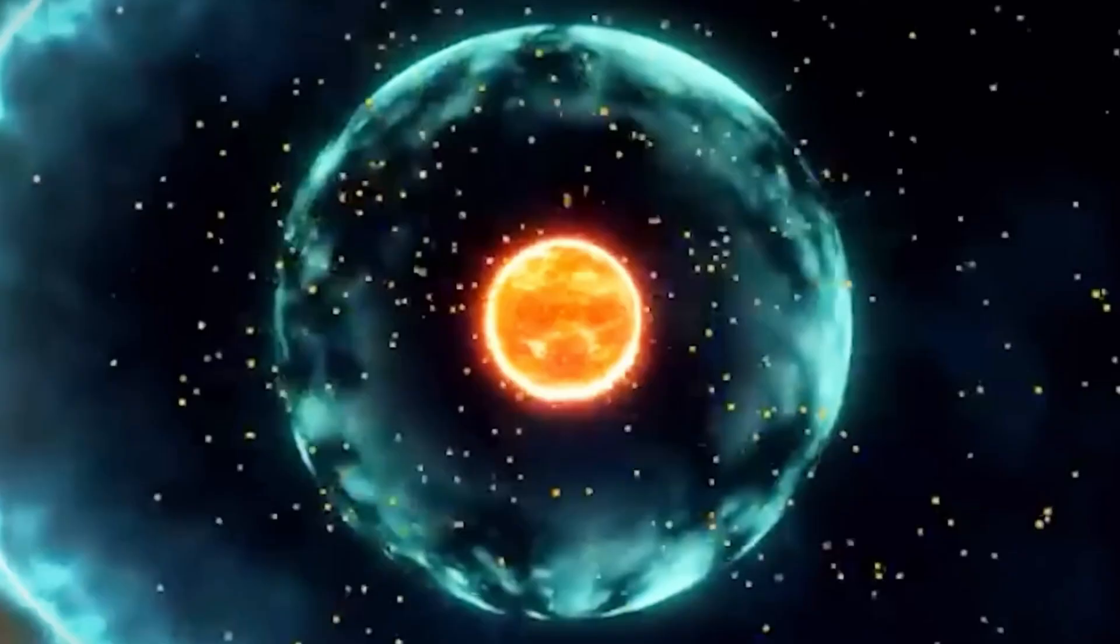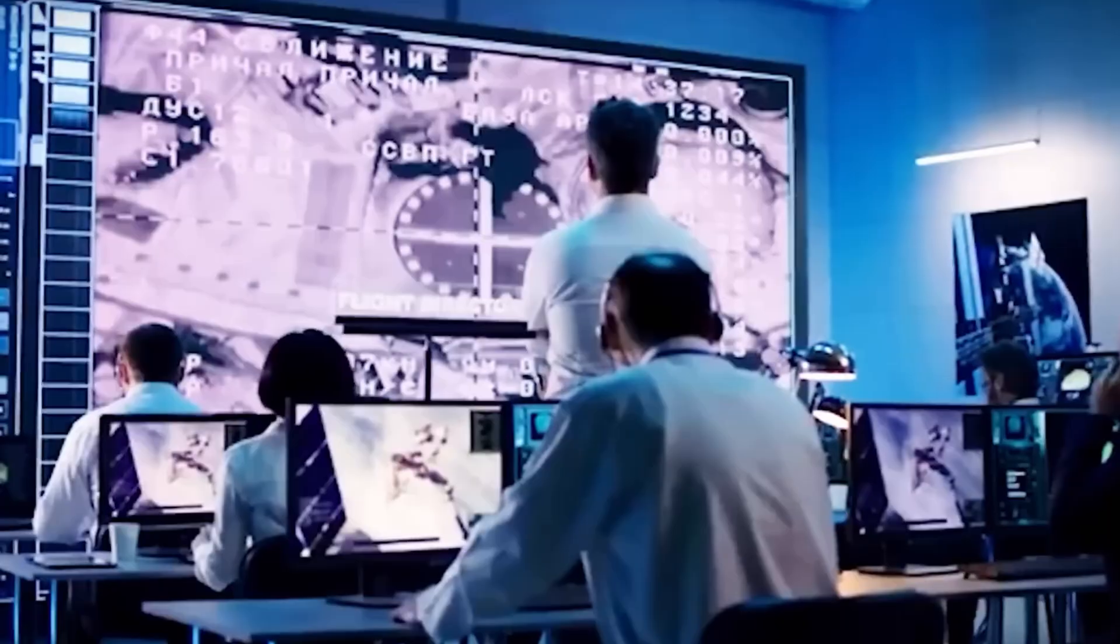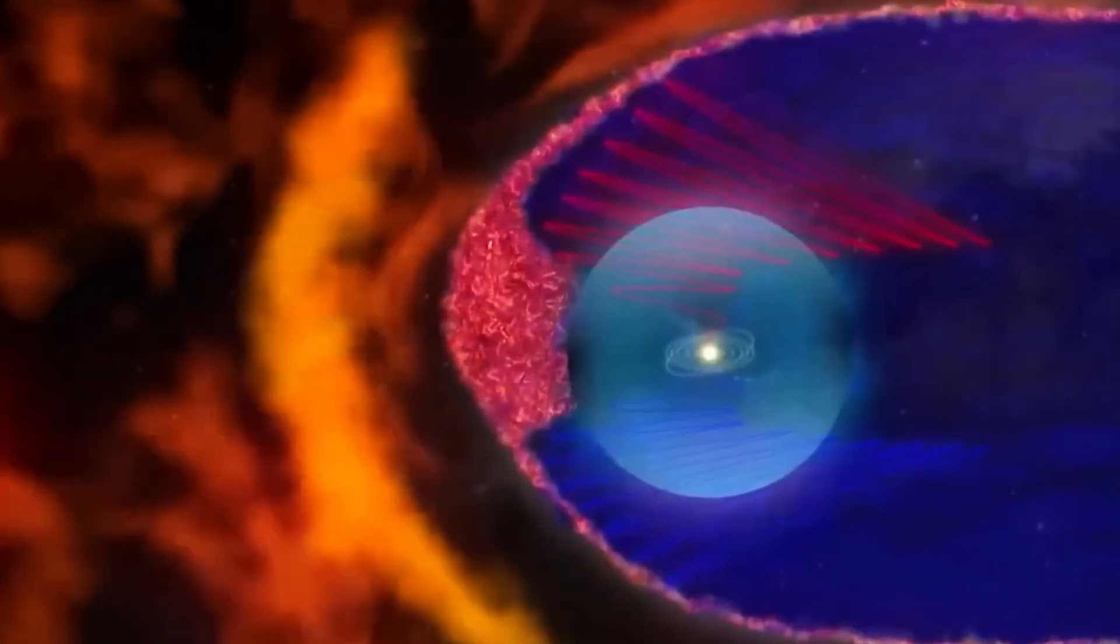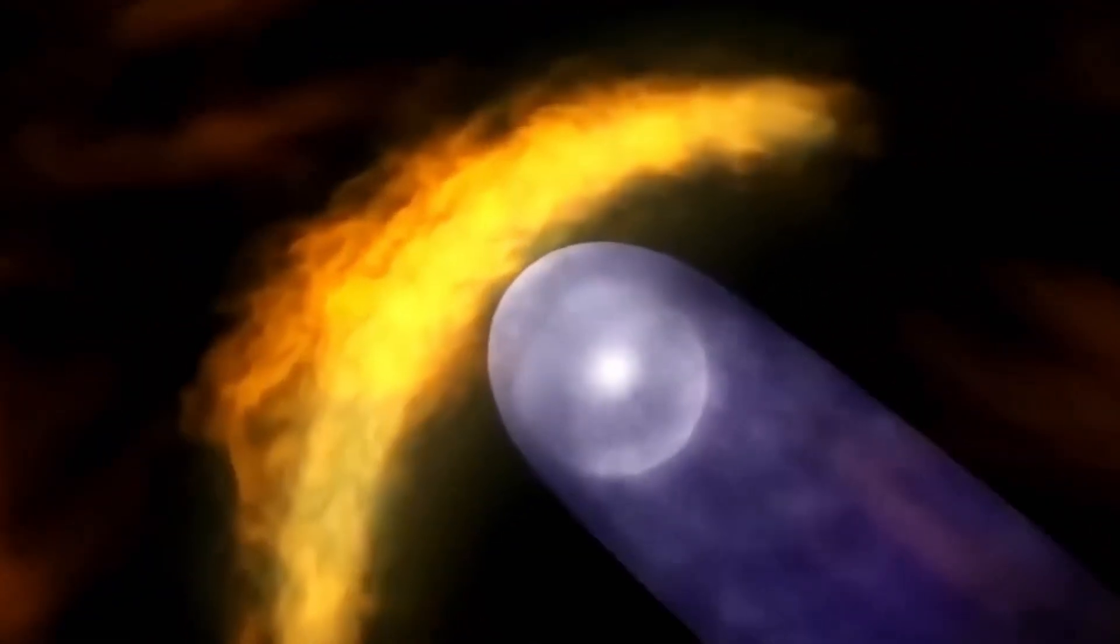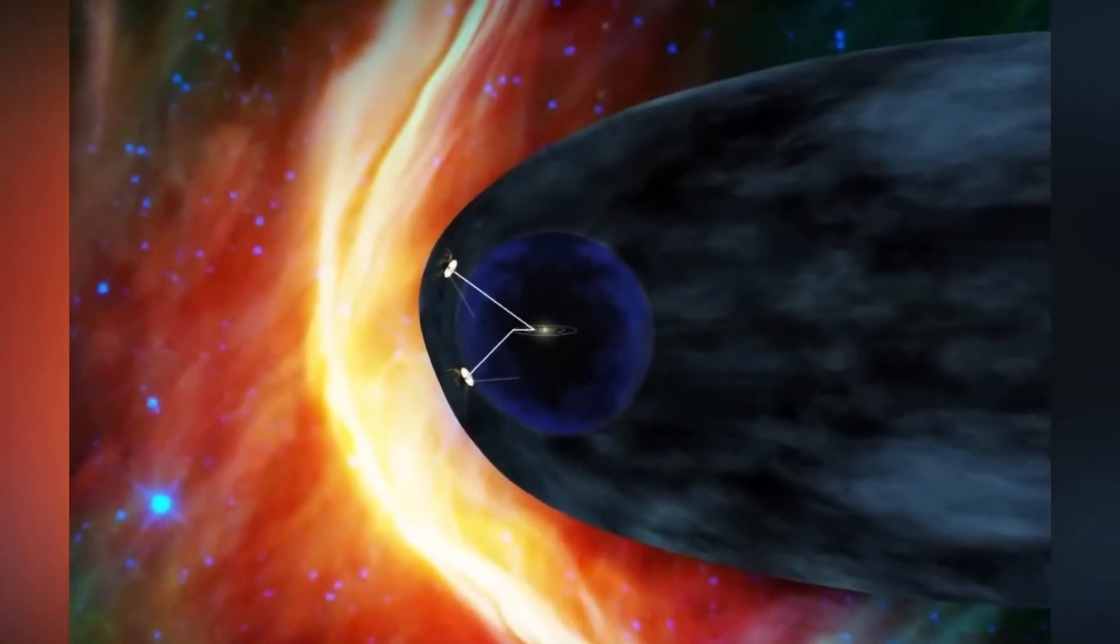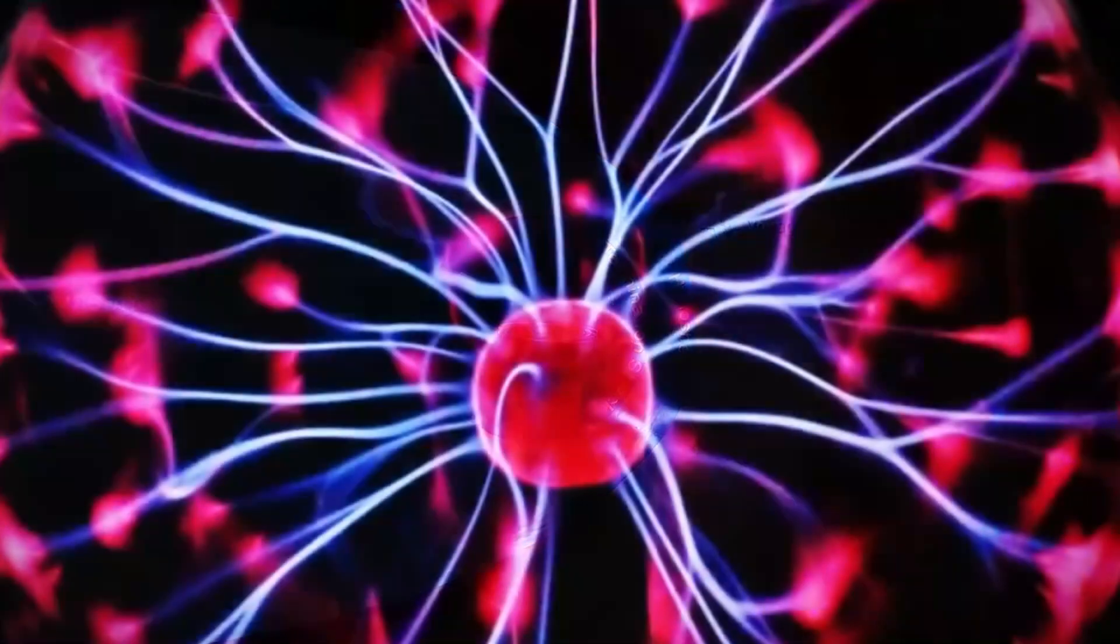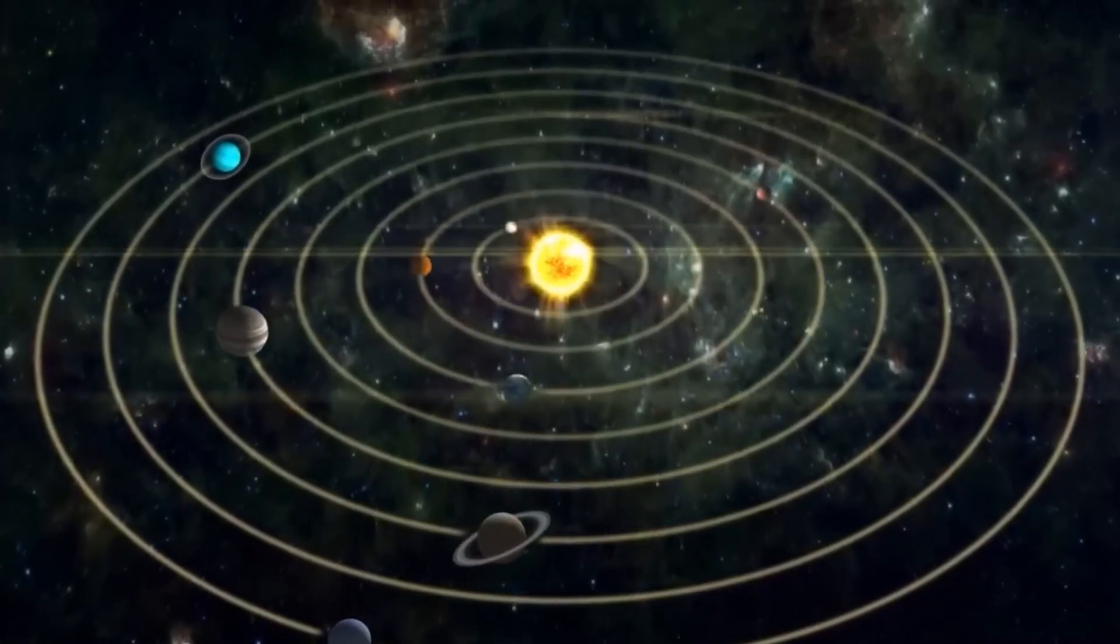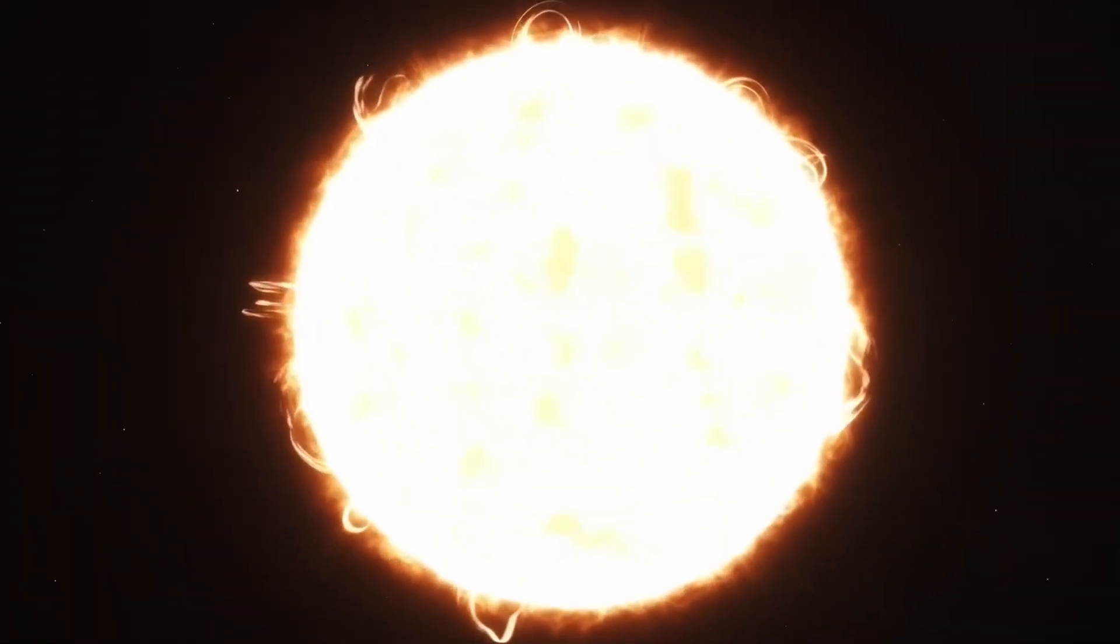Voyager 2 achieved a major milestone in November 2018, becoming only the second spacecraft to enter interstellar space, following Voyager 1's breakthrough in August 2012. Voyager 1's departure from the heliosphere, the vast bubble of charged particles created by the Sun, was confirmed when its plasma wave instrument detected a massive solar eruption between April 9 and May 22, 2013. The eruption caused nearby electrons to vibrate, and researchers found that the surrounding electron density was significantly higher than that within the heliosphere.